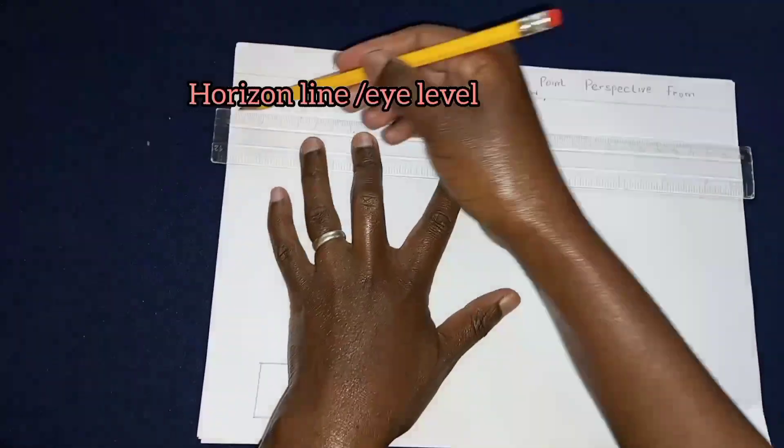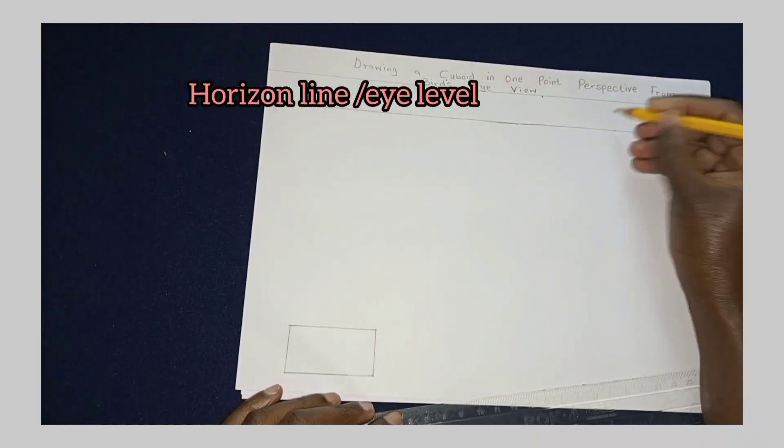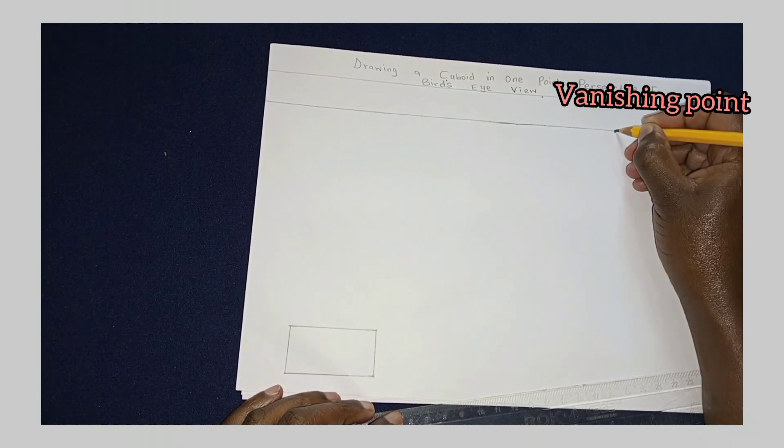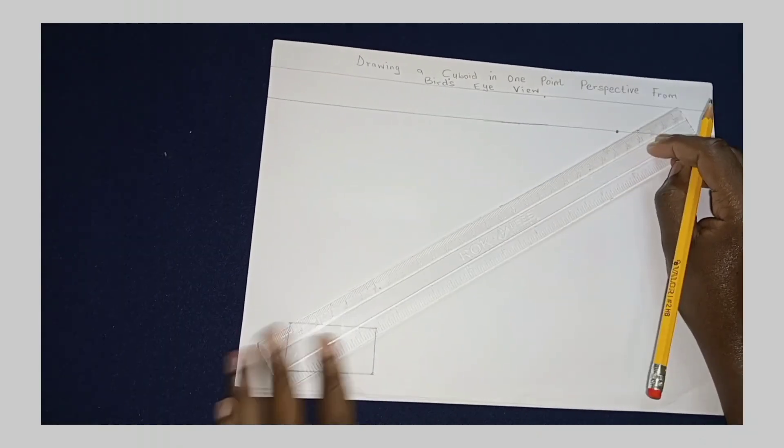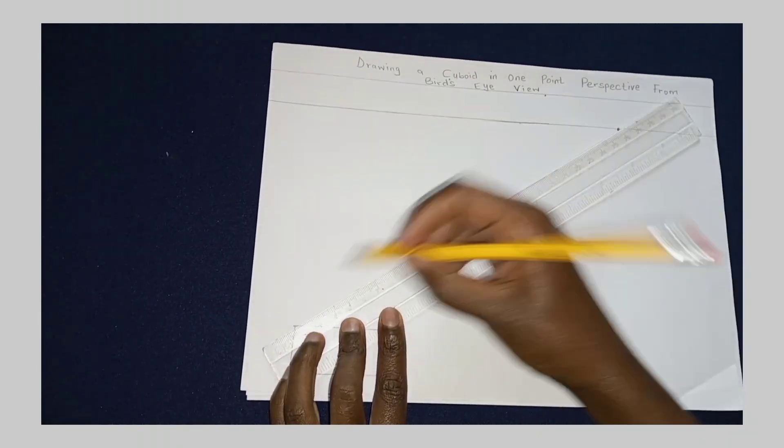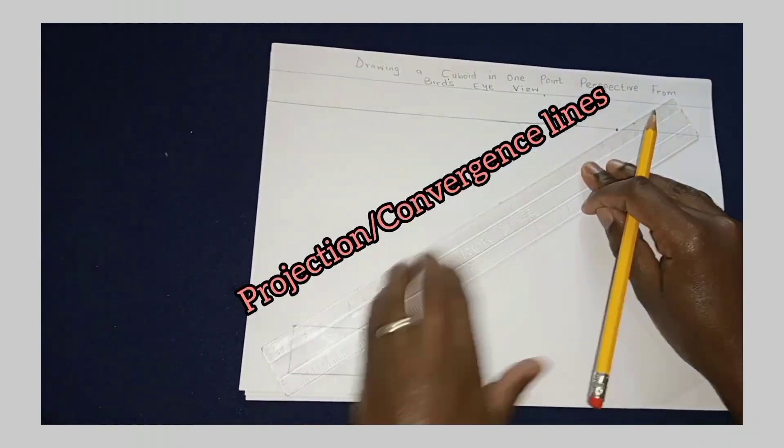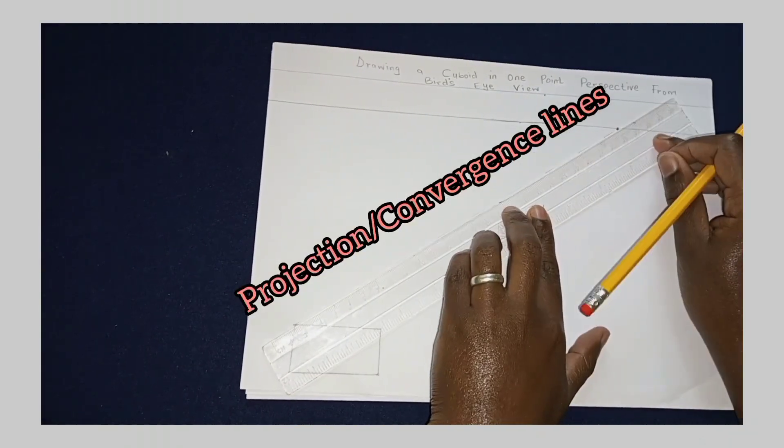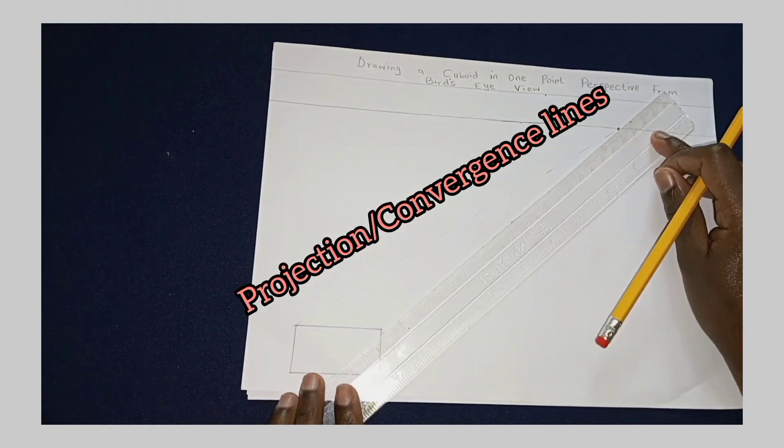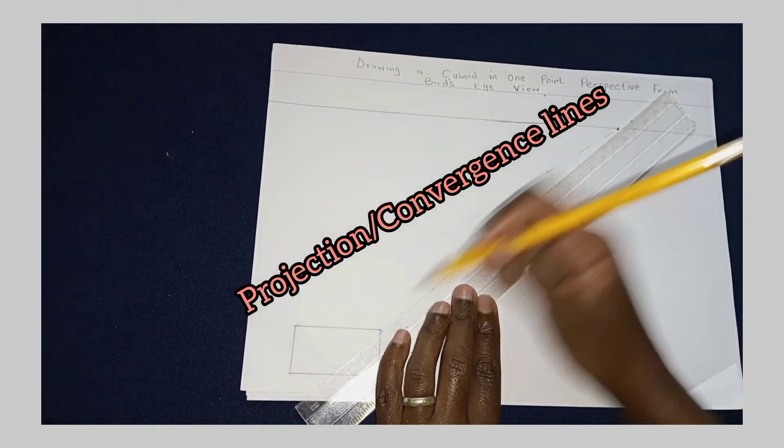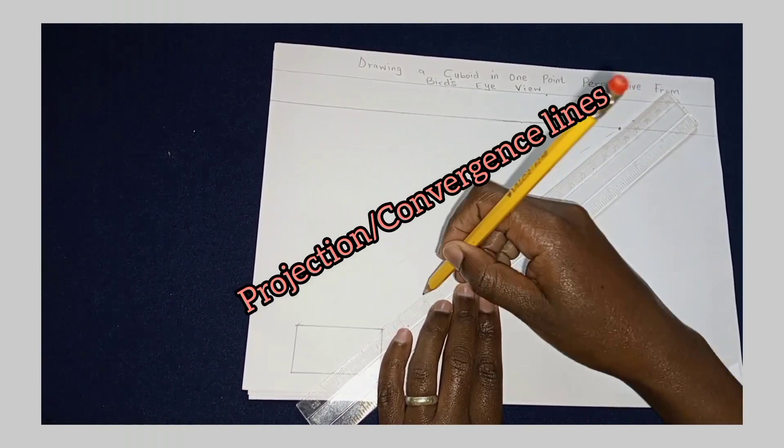Draw a horizontal line above the rectangle that we have just drawn and then mark the vanishing point. Draw the projection of the convergence line towards the vanishing point.